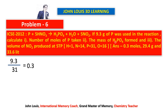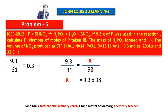Second question — mass of phosphoric acid H₃PO₄ formed: the molecular weight of H₃PO₄ = 98. Using the formula: 9.3 ÷ (1 × 31) = x ÷ (1 × 98). Therefore x = 9.3 × 98 ÷ 31 = 0.3 × 98 = 29.4 grams of phosphoric acid.